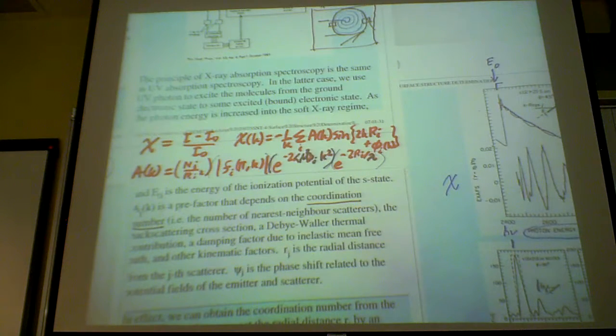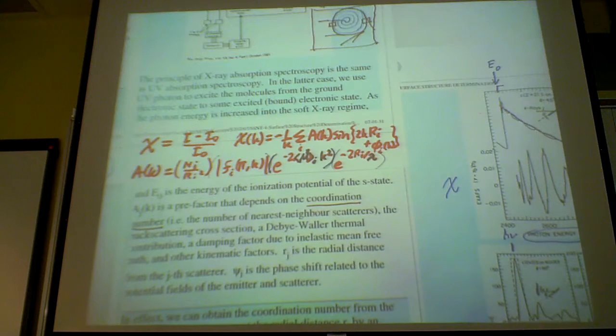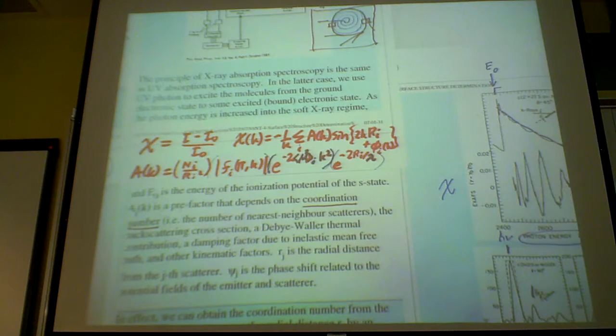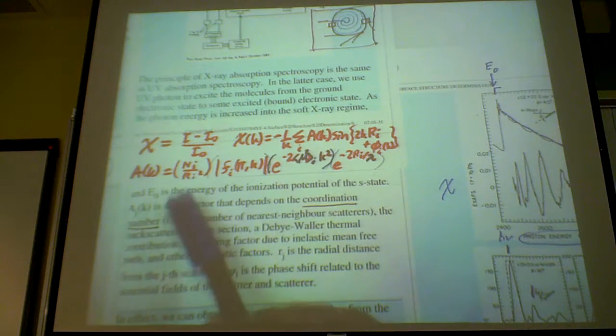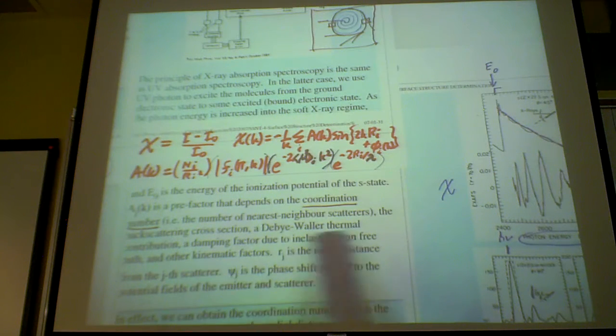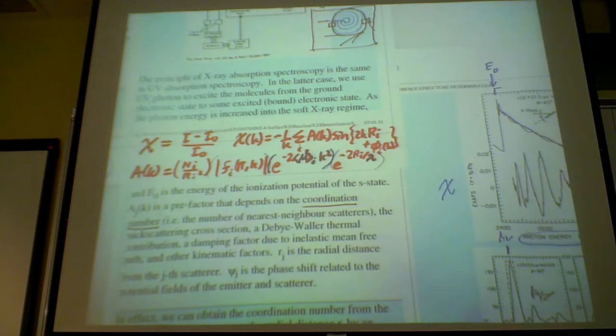So A depends, is a phi exponential factor, because that controls how big this amplitude is of this chi curve. And the most important thing is that it depends on n sub i, and n sub i is the coordination number, it's the number of nearest neighbor scatterers. So if you have absorption of a photon, that's the emitter, because once you absorb the photon, it emits the electron waves, and then this will actually bounce off the neighbor, and those are the neighbor scatterers that we are looking at.